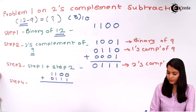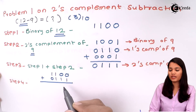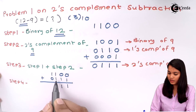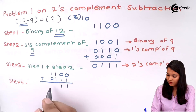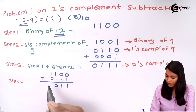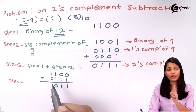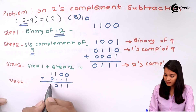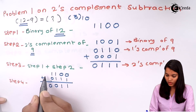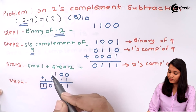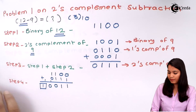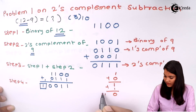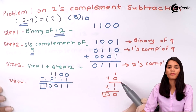Let's add these two values. 0 plus 1 gives 1. 0 plus 1 gives 1. Then 1 plus 1 gives 0 with a carry of 1. Next, 1 plus 0 is 1, plus the carry of 1 gives 0 with a carry of 1. No further digits remain, so the final carry is 1. Therefore the addition result is 1 0 0 1 1, with a carry out of 1.